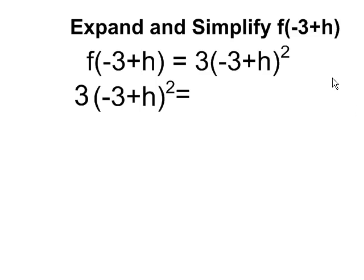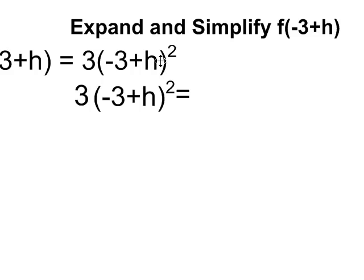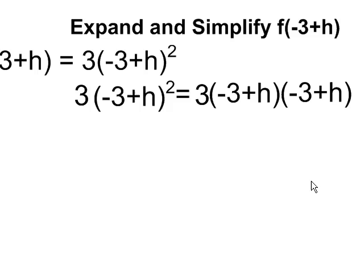So f at negative 3 plus h is 3 times the quantity negative 3 plus h squared. So I'm going to end up expanding and simplifying that part of the equation. So 3 times negative 3 plus h squared. When I expand that, 3 times the binomial negative 3 plus h squared.